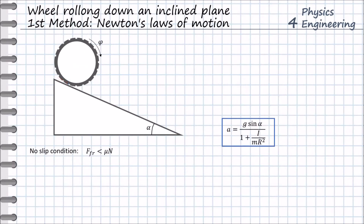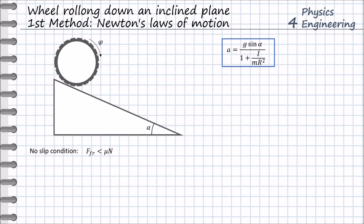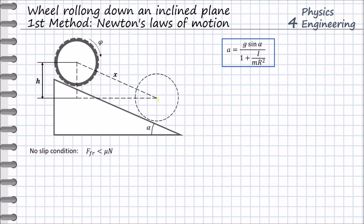Now we need to find the linear velocity of the wheel at the end of the slope. For this we need one additional input: h, the vertical distance between the upper and lower positions of the wheel. To find the final velocity, we use the kinematic formula connecting the path length, the initial velocity v₀, the final velocity v, and the linear acceleration a. In our case the initial velocity v₀ is zero. From the triangle geometry, we can derive x, the path length from top to bottom, which equals h divided by sin alpha.